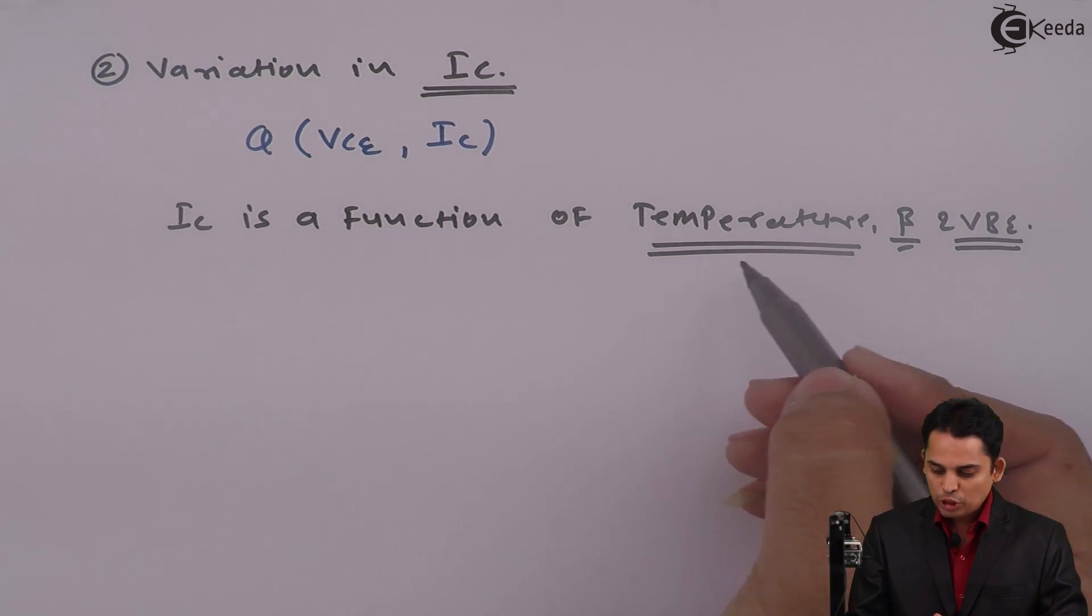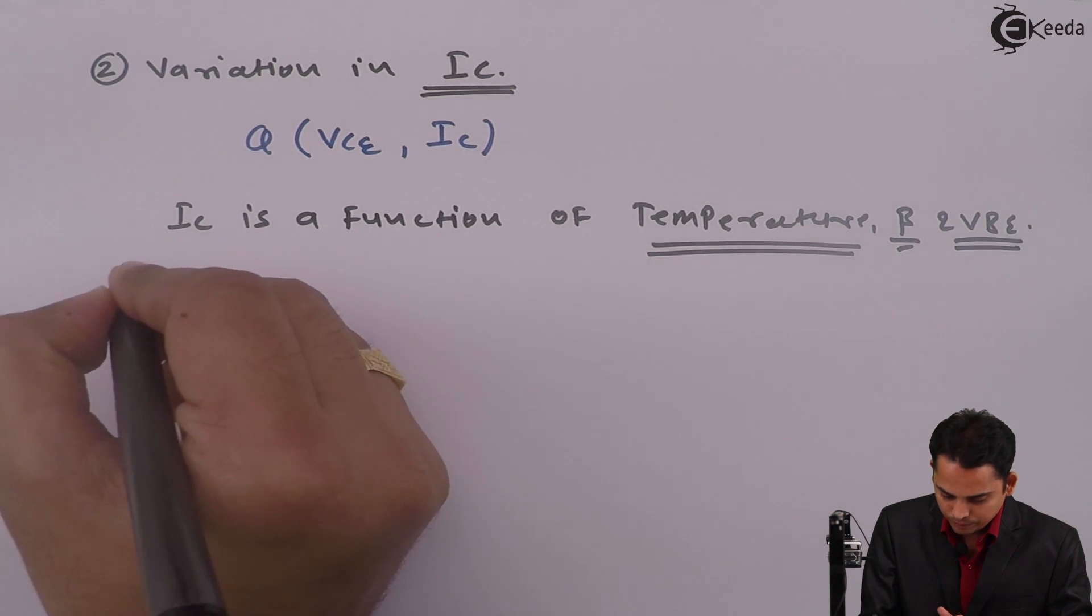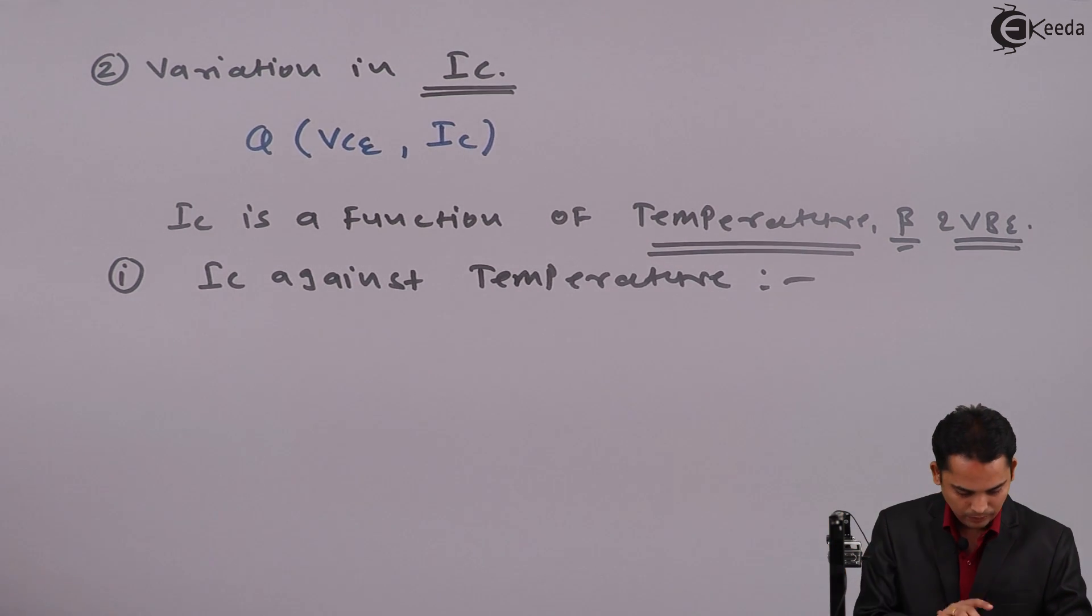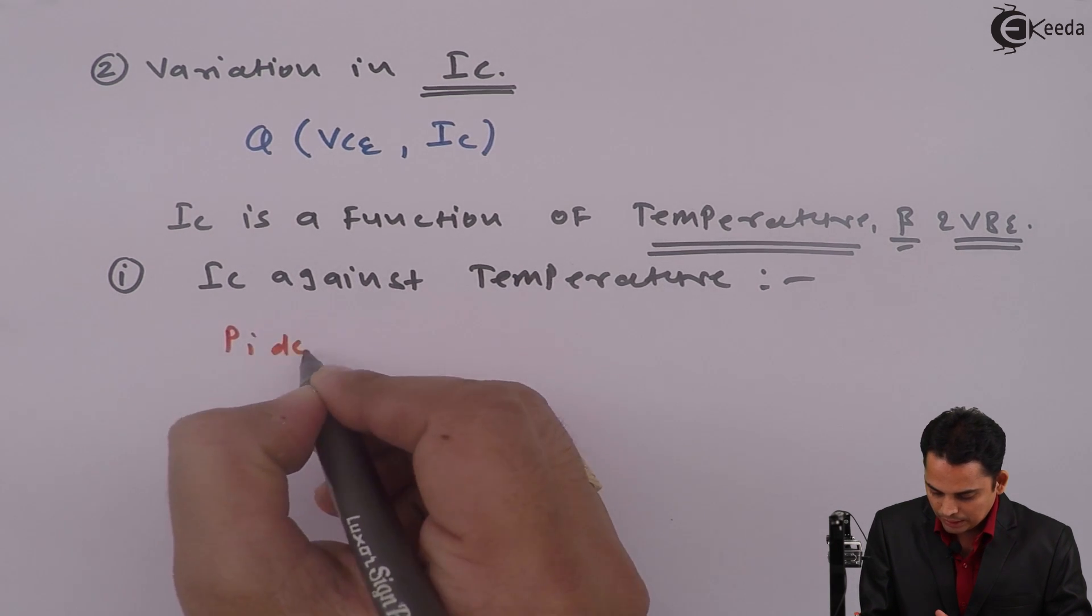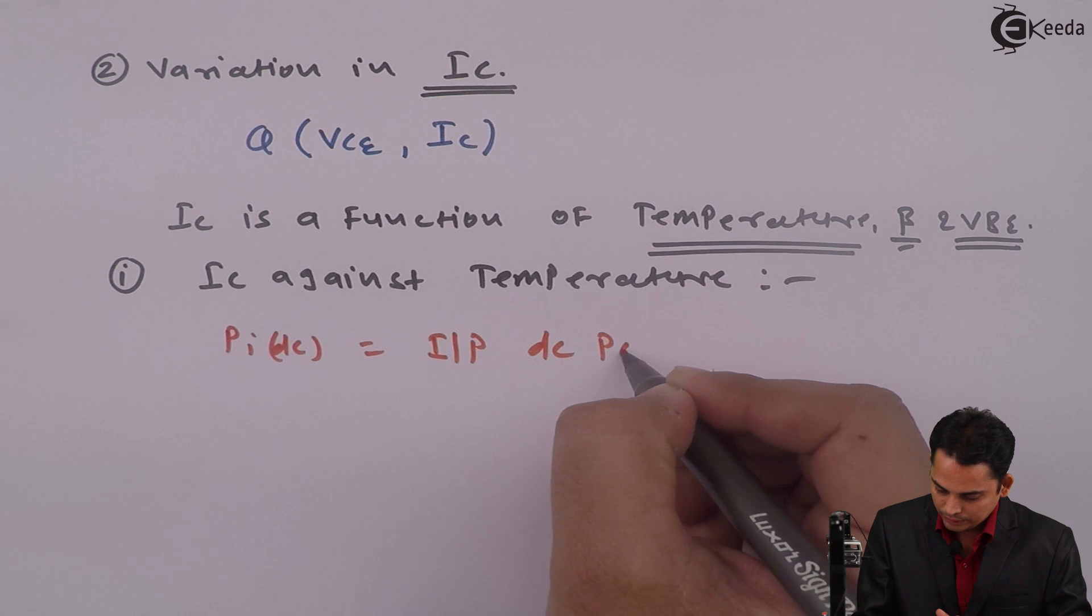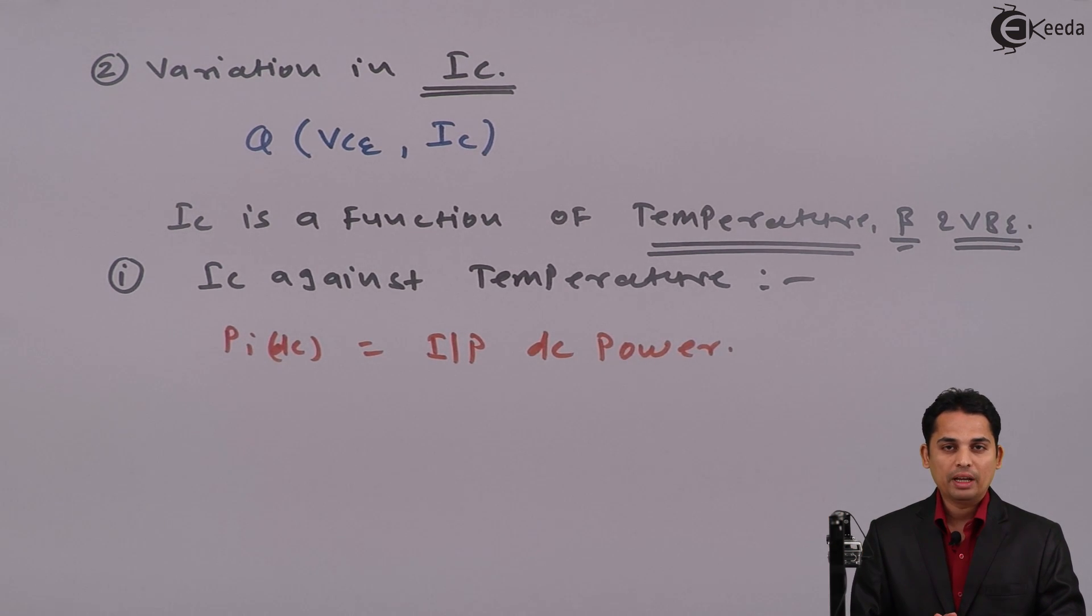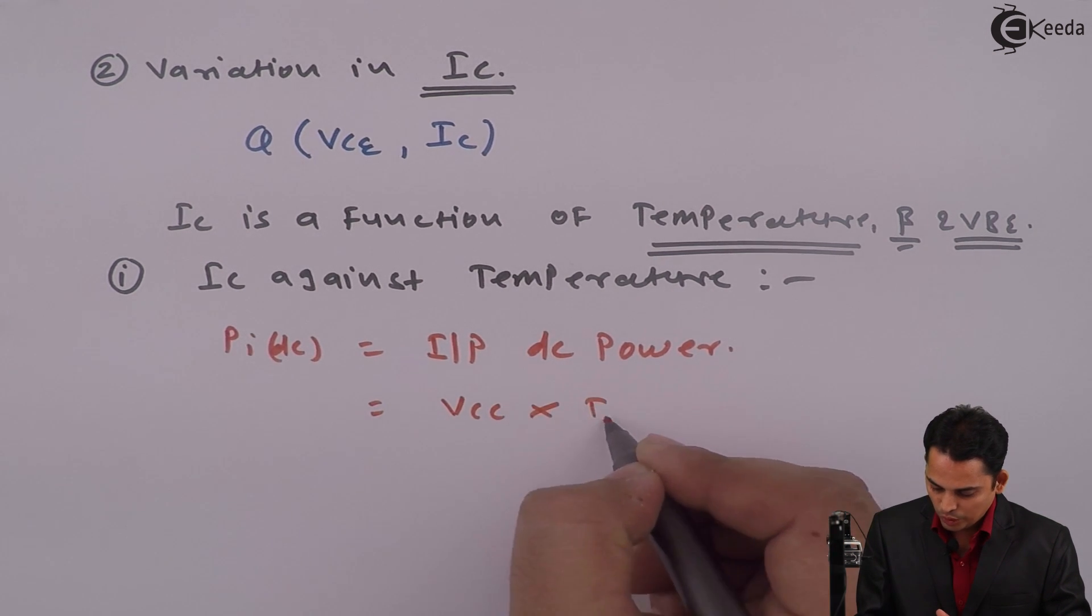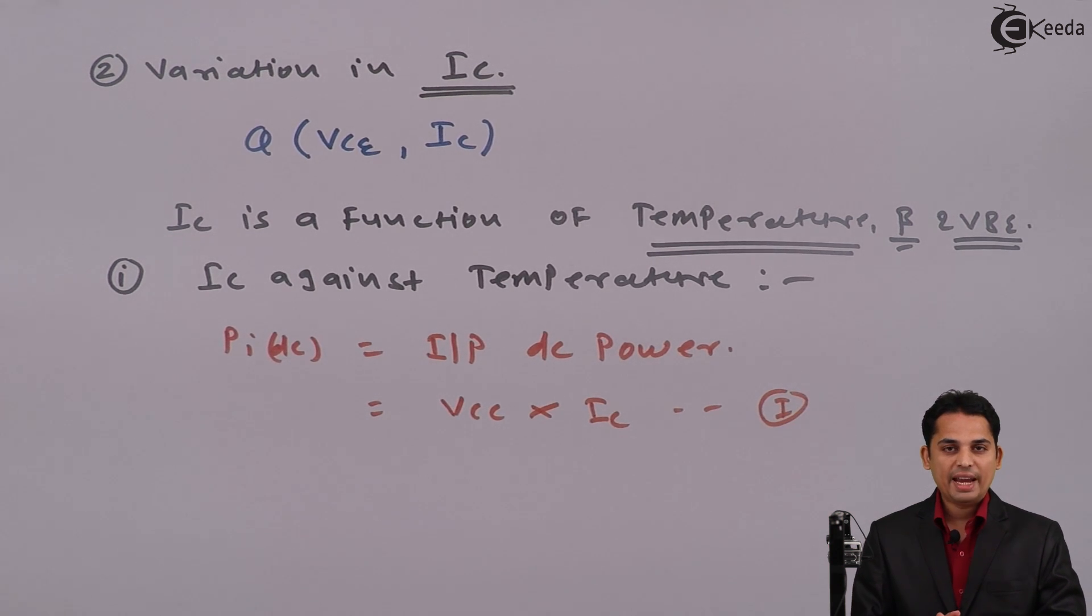Now, let us see in detail. The first point is temperature. Let PIDC is nothing but input DC power, which is given by power supply or DC source, which can be written as VCC into IC. Let us call this equation 1. PIDC is power supplied to the transistor by external DC source, whose value is given as VCC into IC.